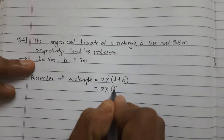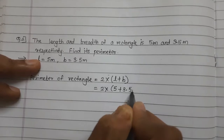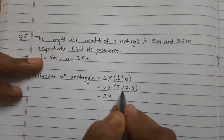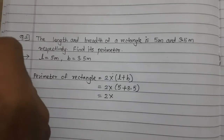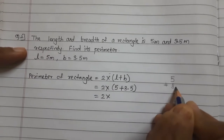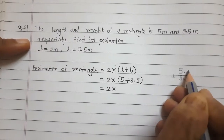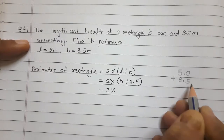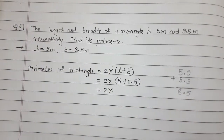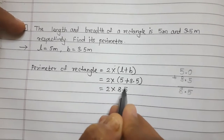The length is 5 meter and the breadth is 3.5 meter. So we write 2 multiplied by (5 plus 3.5). First we solve the bracket: 5 plus 3.5. Since 5 is a whole number, we write it as 5.0, so 5.0 plus 3.5 equals 8.5.